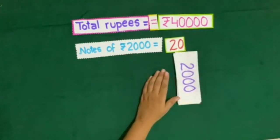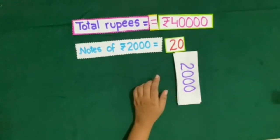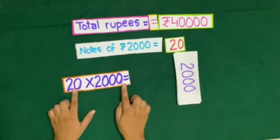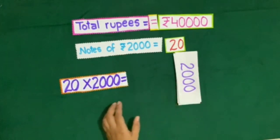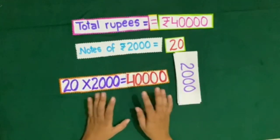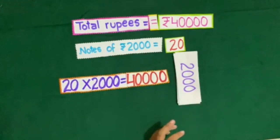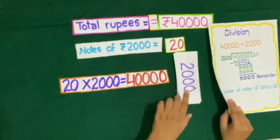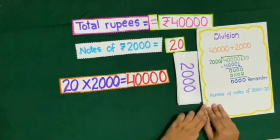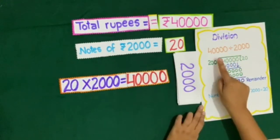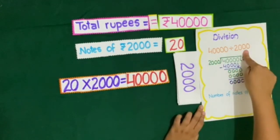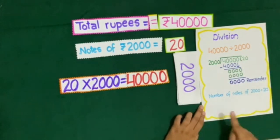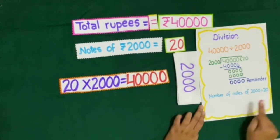Now we have got that 20 times 2000 is equal to rupees 40,000. There is another method to solve this which is called division. So 40,000 divided by 2000 is equal to 20. So the answer is 20.